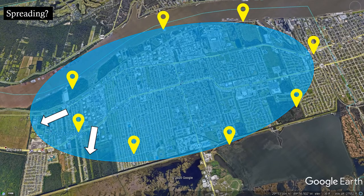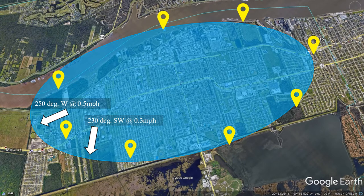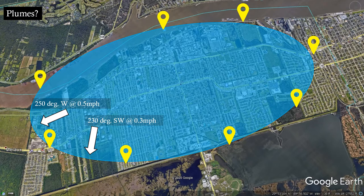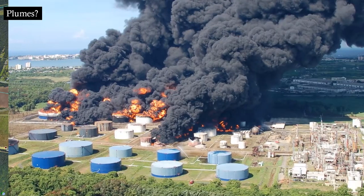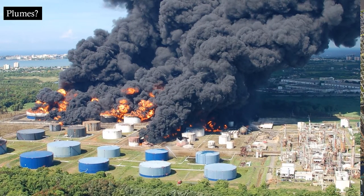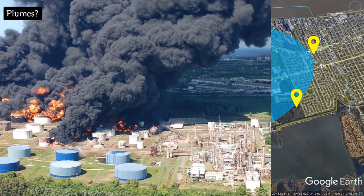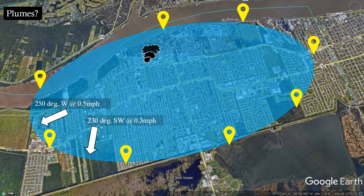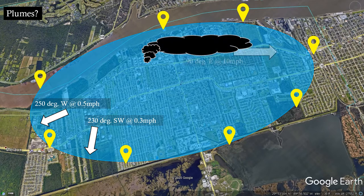Ask yourself: is damage spreading? If so, try to record what direction and how fast that change is occurring. Are there any plumes nearby? If floodwaters destroy a key regulator at a local plant and an explosion releases a smoke plume, make sure to record the direction and speed of any such plumes, since they may be hazardous to public health.